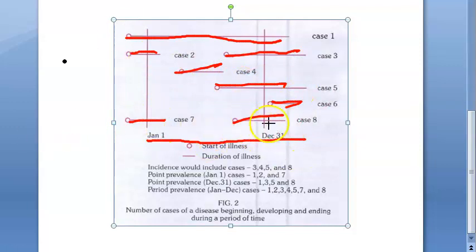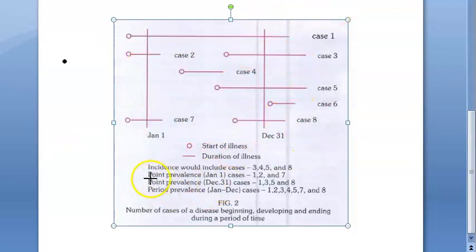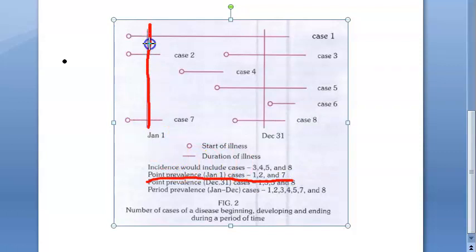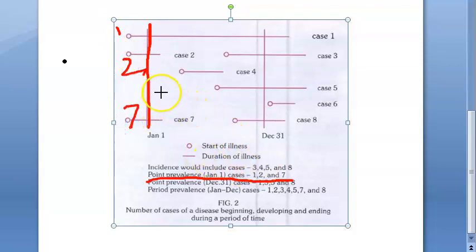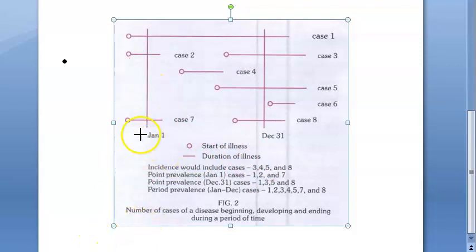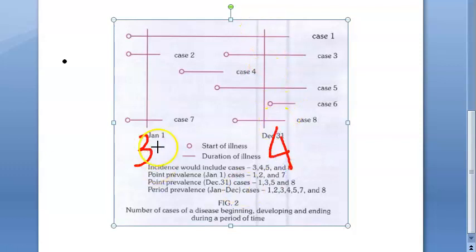So many cases are there in this one year. Now look at point prevalence on Jan 1st — how many cases are there? One, two, and seven — three cases total on Jan 1st. Point prevalence on Jan 1st: three cases. And on December 31st, how many cases? One, two, three, four — four cases on December 31st. That is the point prevalence.